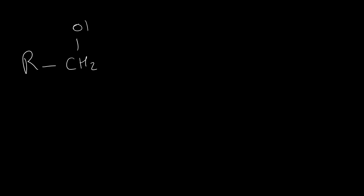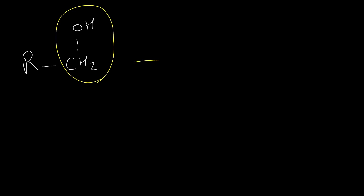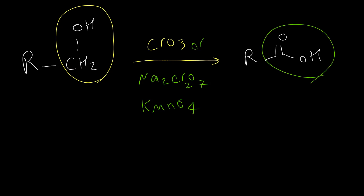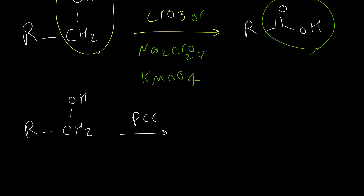When we have a primary alcohol, its structure has a CH2OH group. If we use chromium oxide, sodium chromate, or potassium permanganate, we always get carboxylic acid as the product, so the entire CH2OH converts to the carboxylic acid functional group.